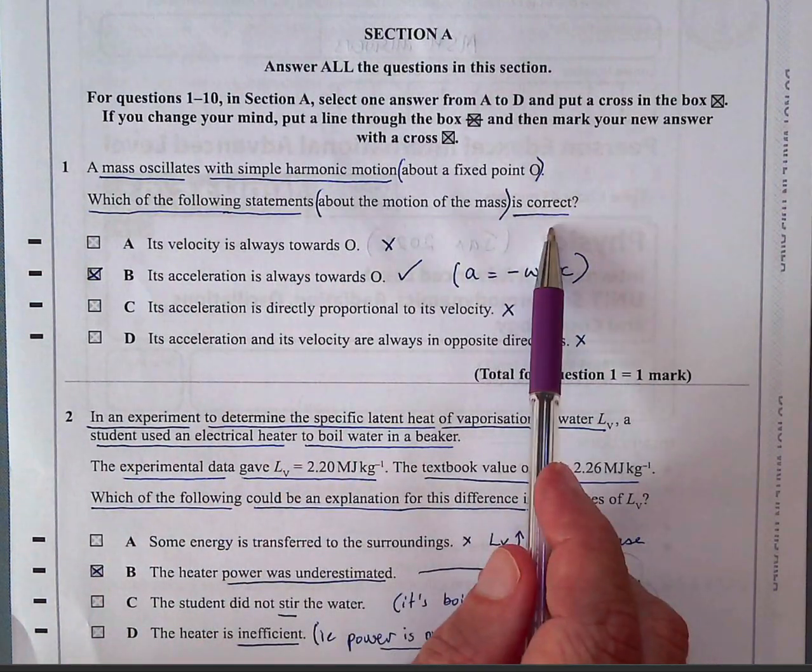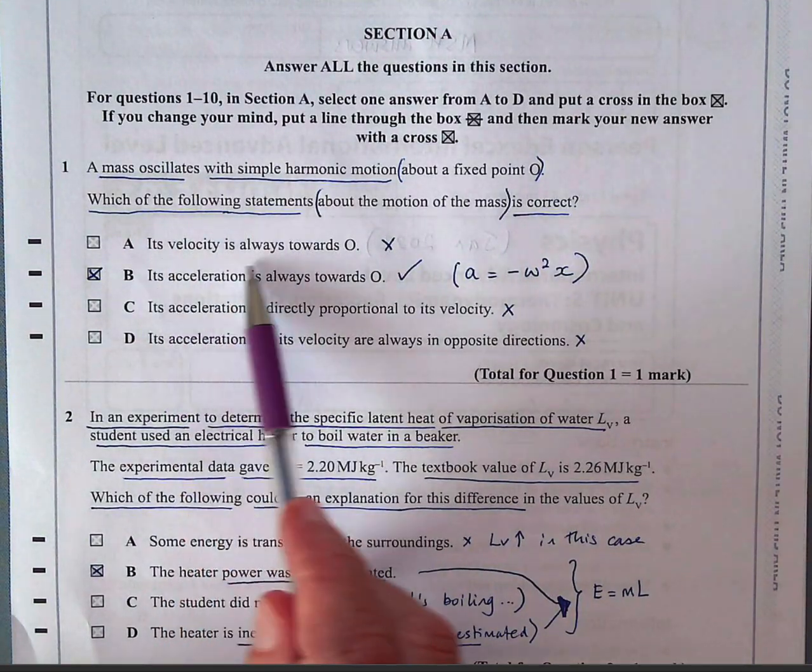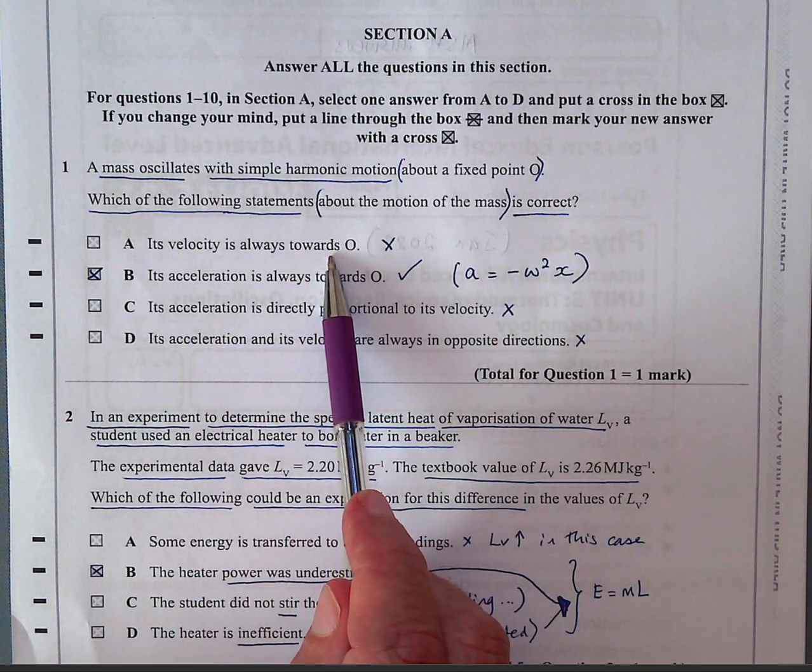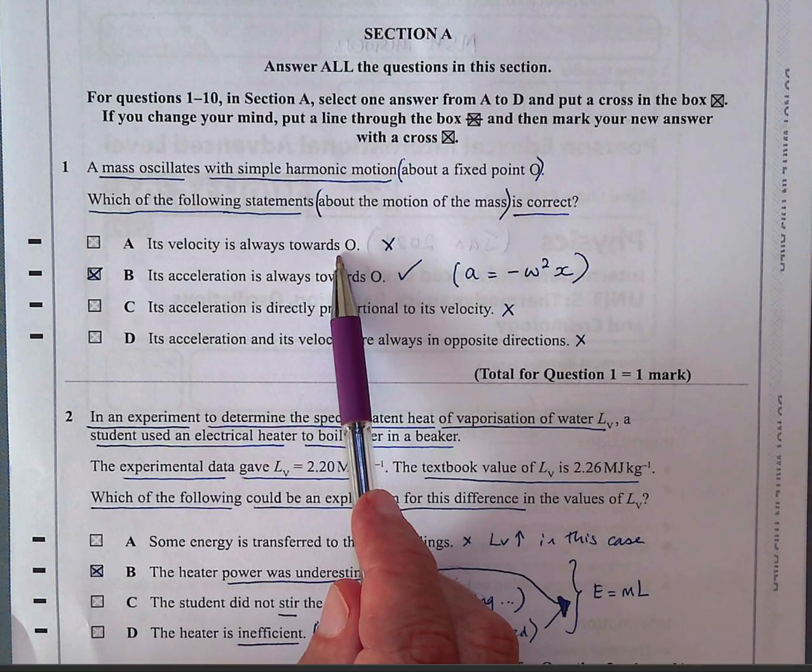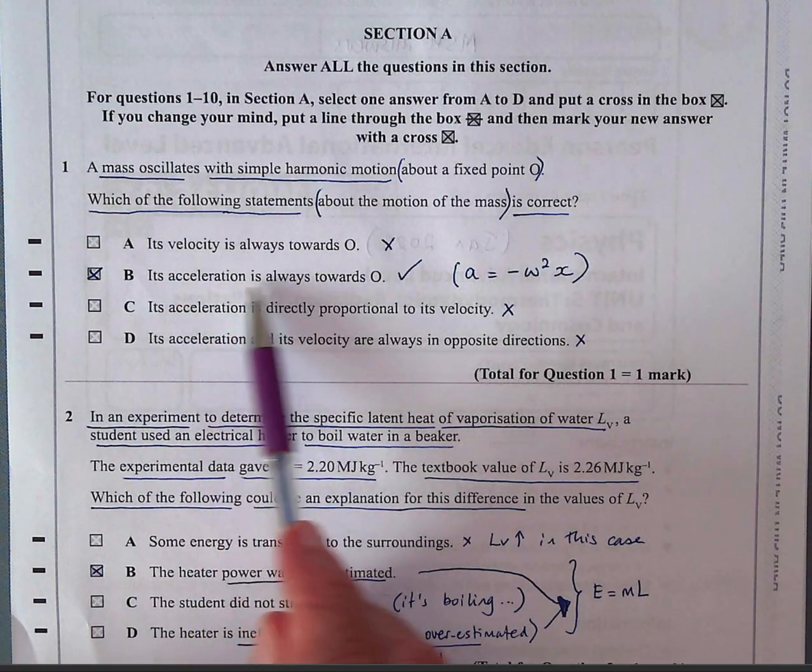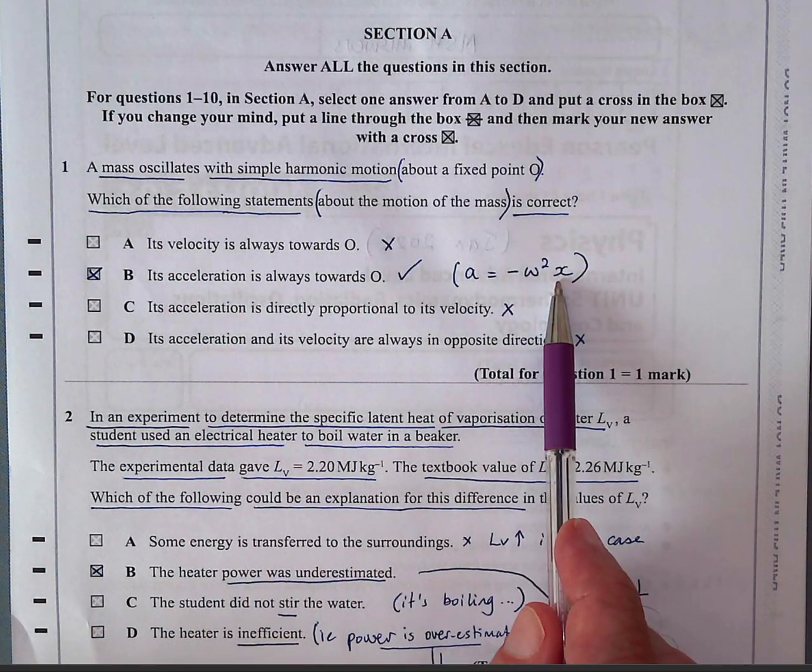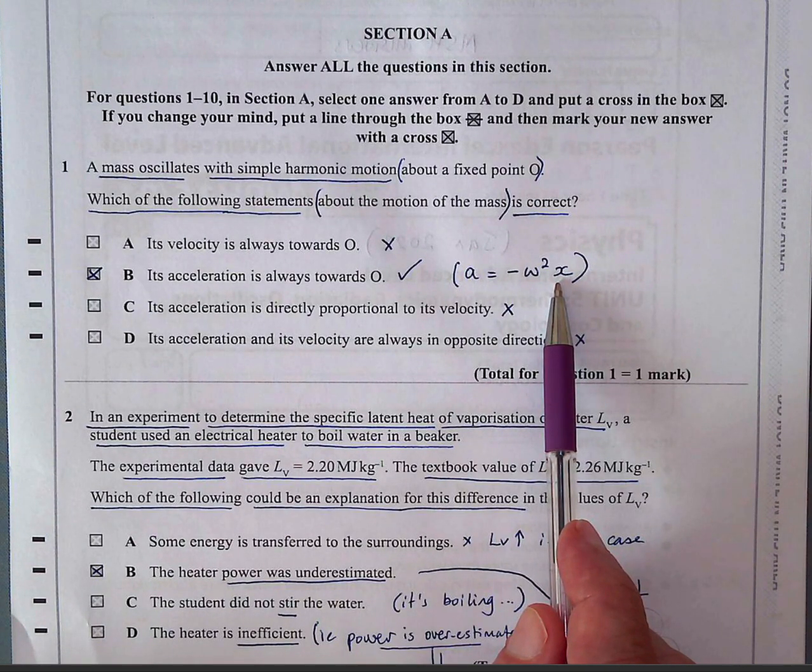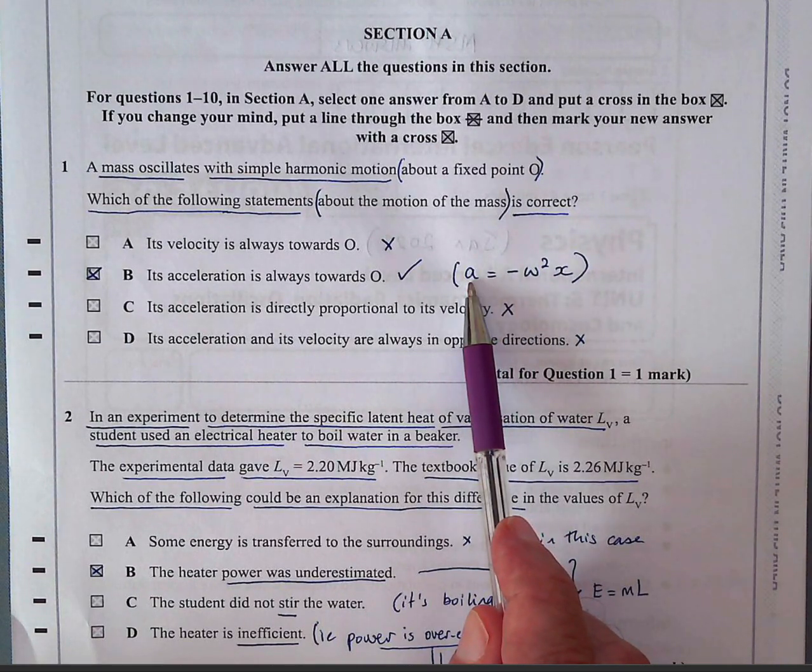Which of the following statements is correct about the motion of the mass? Its velocity is always towards O. Well, that's not true because sometimes it has to move away from O to oscillate to and fro. B is the answer. Its acceleration is always towards O because if you pull it, the displacement is to the right. So the displacement is positive, the acceleration will be negative towards the centre.